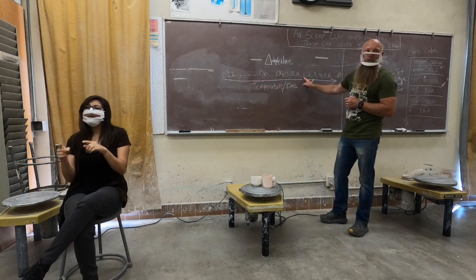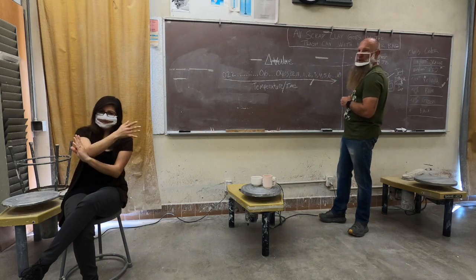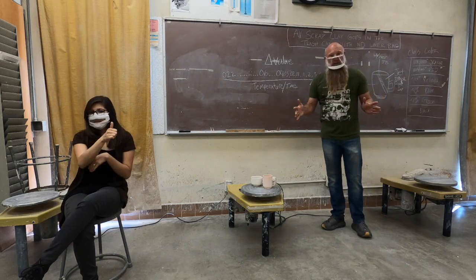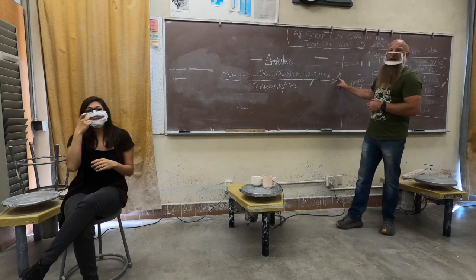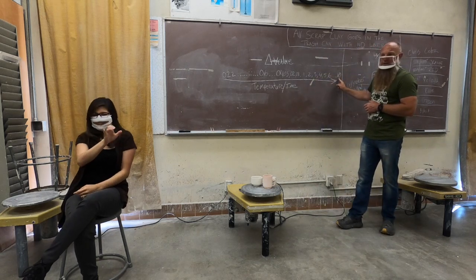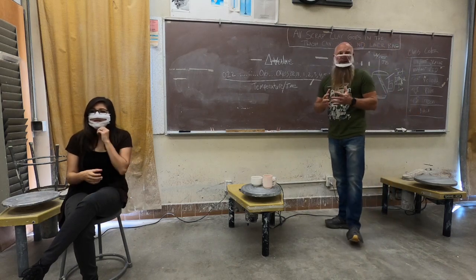Then as we come up here higher on the cone value chart, cone 1, 2, 3, 4, 5, 6, so on and so forth, up to cone 10, it goes higher than cone 10, but we're just stopping at cone 10 because this, cone 10, is what we fire our glaze kilns here at Riverside City College. So just so you guys get an idea.